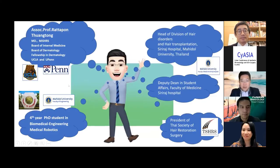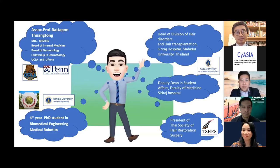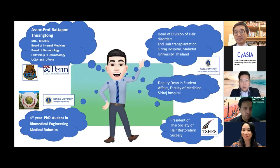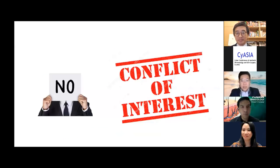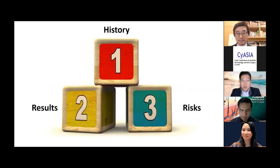My name is Associate Professor Ratapon Thuong Thong. I'm Head of the Division of Hair Disorder and Hair Transplantation at Siriraj Hospital, Mahidol University, Bangkok, Thailand, and also President of the Thai Society of Hair Restoration Surgery. I have no conflict of interest. Today I will talk about three things: history of risk for iron and vitamin deficiency, the results of mineral and vitamin deficiency, and clinical management.